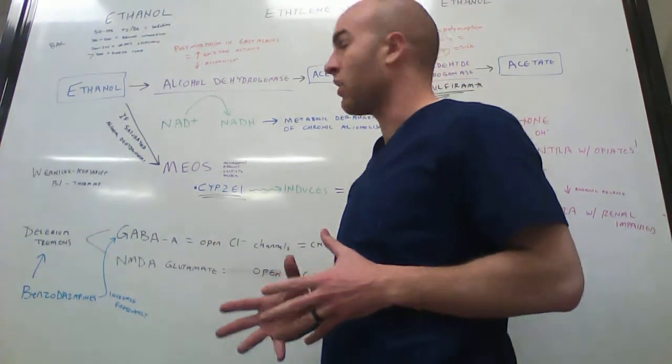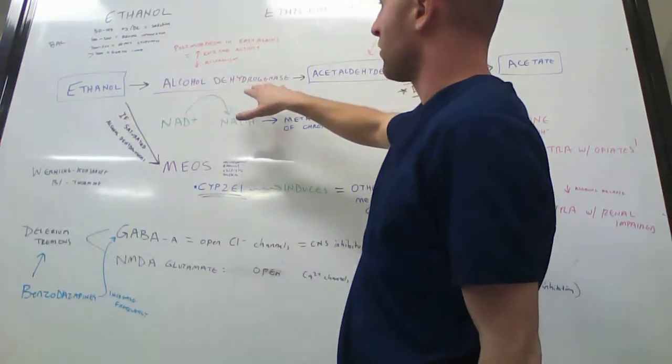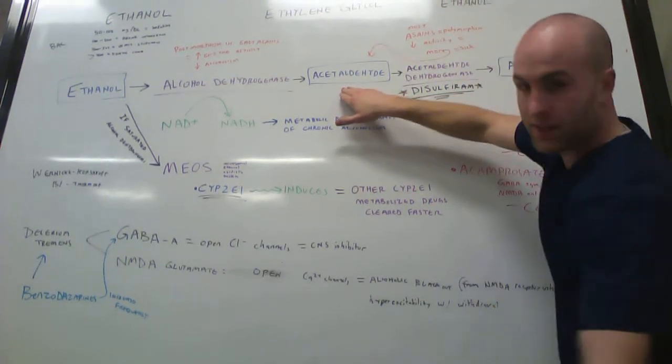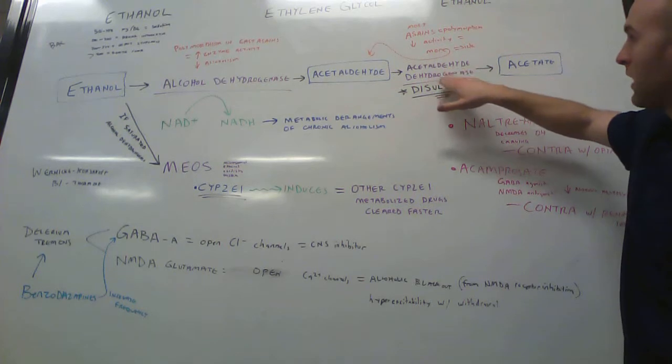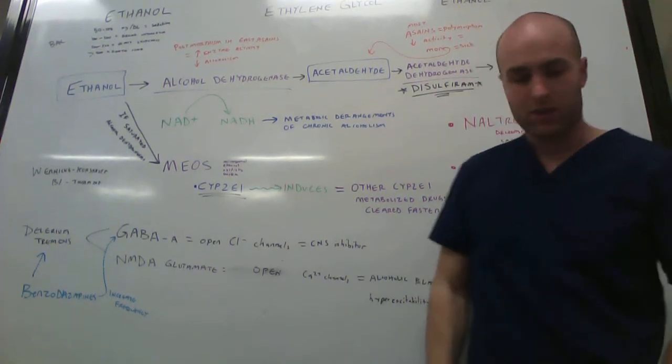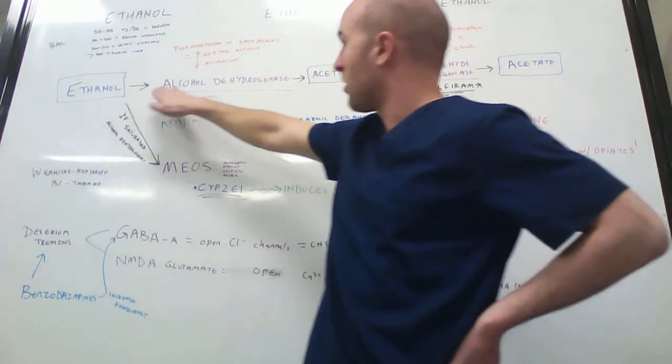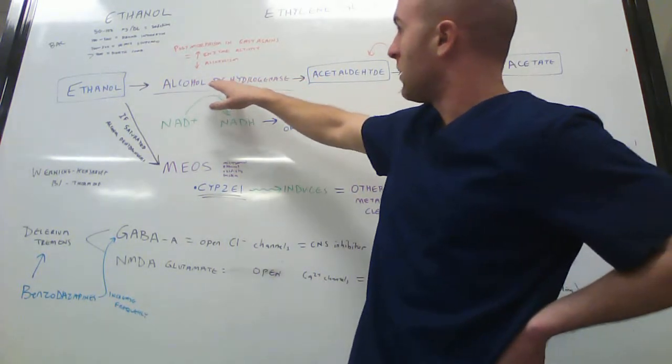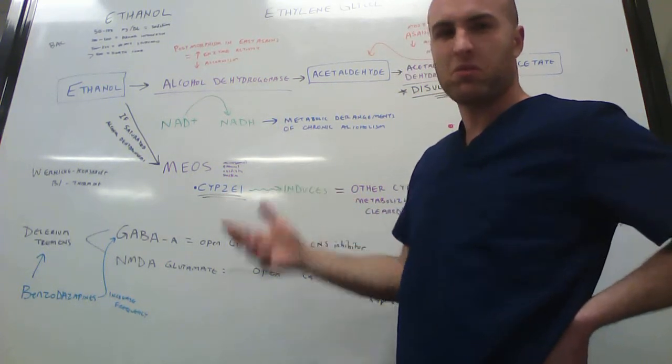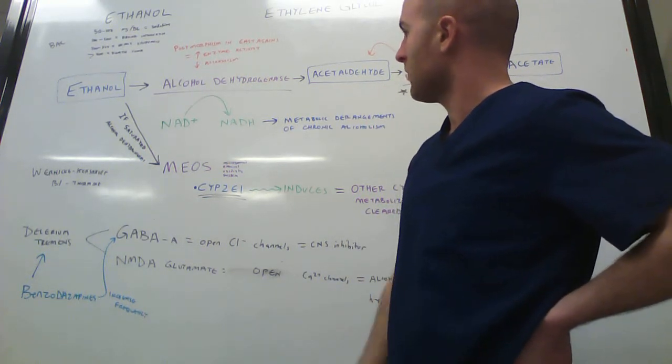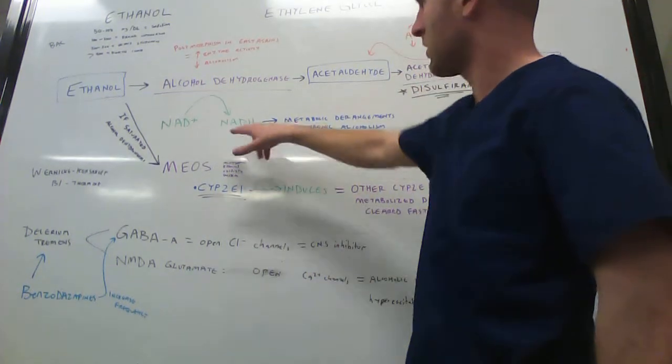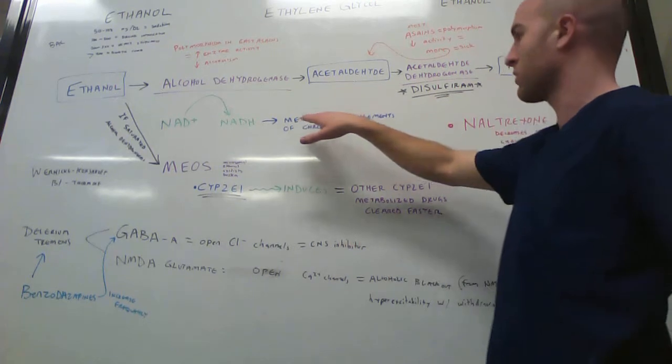So basically what happens when someone ingests alcohol is, first of all, we have an enzyme in our body called alcohol dehydrogenase. And this will break down the ethanol into acetaldehyde, and then the acetaldehyde will be broken down by something called acetaldehyde dehydrogenase, or sometimes it's just called aldehyde dehydrogenase. And that will break it down into acetate, and then from there it breaks down into things that our body can handle. So starting out here, this first step, this alcohol dehydrogenase, which turns ethanol into acetaldehyde, there is a polymorphism in East Asians that results in increased enzyme activity, which also correlates with decreased alcoholism. Also, in this step, there is NAD, which is converted to NADH, and supposedly it's this part that they're theorizing is associated with the metabolic derangements of chronic alcoholism, this NAD to NADH.